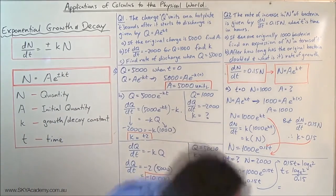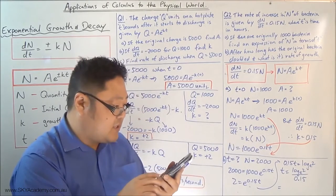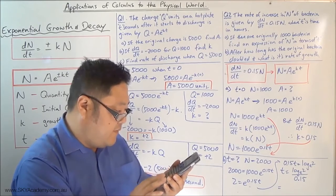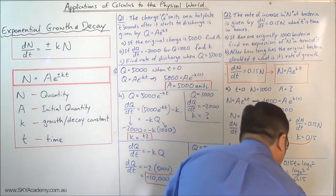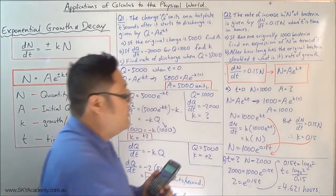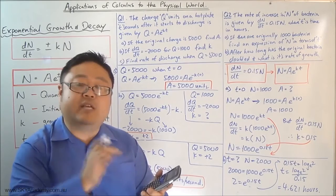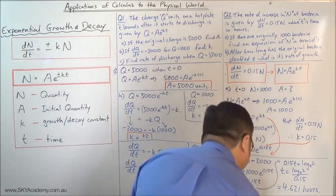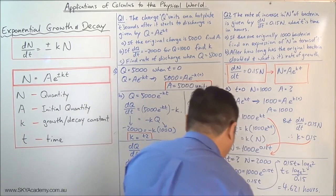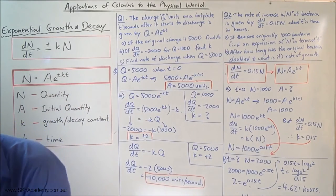Punching that into the calculator — there's no log E button, it'll be the LN button. LN(2) divided by 0.15 gives 4.621 hours. Converting to hours, minutes, and seconds using the degrees-minutes-seconds button gives 4 hours, 37 minutes, and 16 seconds for the bacteria colony to double. That's how you do exponential growth and decay questions.